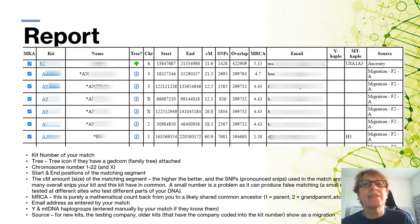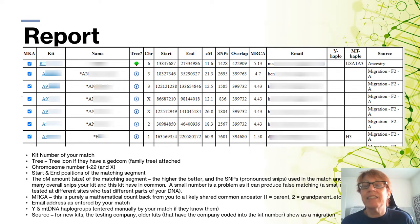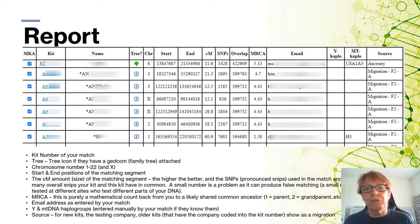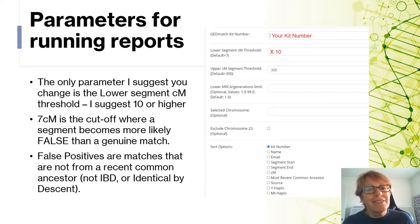The last column is the source. For older kits that have been migrated into the database, the starting character of the kit number tells you where the kit originally came from. For newer kits the source column tells you where it came from. This can be helpful — if you've both tested on Ancestry you might want to go back there and compare trees and find more shared matches.